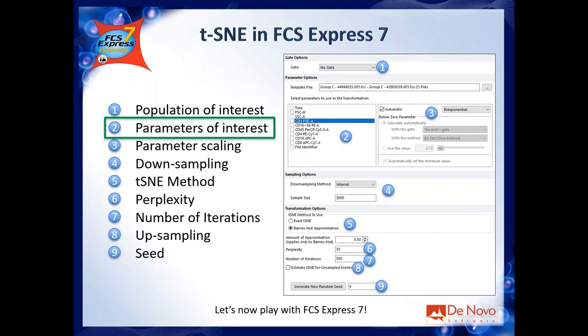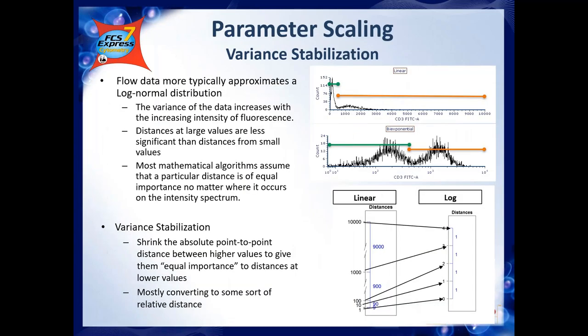The third point is parameter scaling, which is pretty important. I'm sure all of you know that 99% of the time when displaying a fluorescence marker on a plot we apply a scale such as log, biexponential, or hyperlog — very rarely do we use linear scale, except perhaps for DNA cell-cycle analysis.